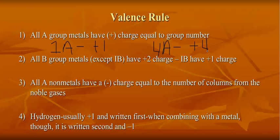All the B group metals, which are the transition metals, have a plus 2 charge, except column 1B, which has a positive 1 charge. All A group non-metals have a negative charge equal to the number of columns from the noble gases. So if I'm an A non-metal in group 6A, like oxygen or sulfur, I'm 2 away from the noble gases, so my charge would be negative 2. If I'm a non-metal in group 5A, I'm 3 away from the noble gases, so my charge would be negative 3.